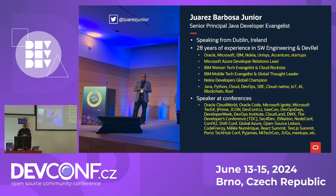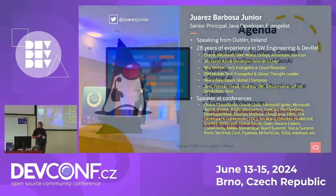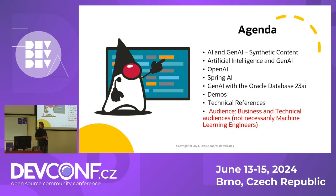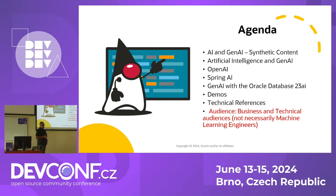But it's not a talk about my role and my profile, so let's move to the interesting stuff. That's our agenda for today. I'm going to talk a little bit about AI and GenAI and synthetic content, then move to have a look at the current status of AI in terms of the latest advancements and AGI. Then the next one is OpenAI, which needs no introduction — everyone knows OpenAI and ChatGPT.